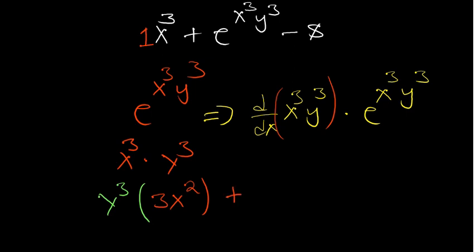Using the product rule: first term is y³ times the derivative of x³ which is 3x², plus the second term is x³ times the derivative of y³. If you differentiate y³ ignoring that it's a y, you get 3y². Since it is y and we are differentiating with respect to x, we multiply by dy/dx.